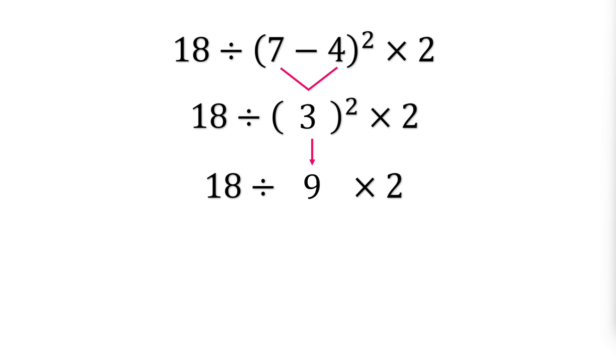Now we perform any multiplication or division from left to right. We have 18 divided by 9, which equals 2. Finally, we multiply 2 times 2 equals 4. That's our final answer.